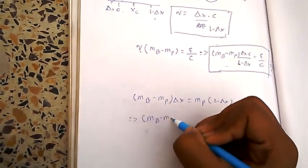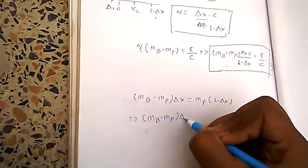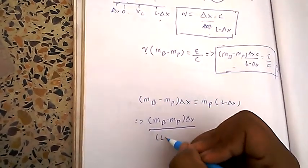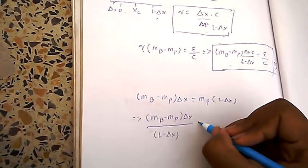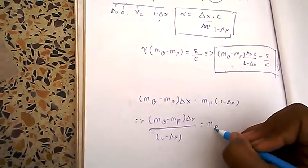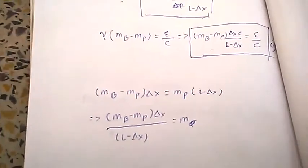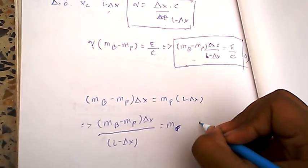So, mass of box minus mass of photon, into delta x by L minus delta x equals to mass of photon, or simply equal to mass. Therefore, you can write this equation 2.